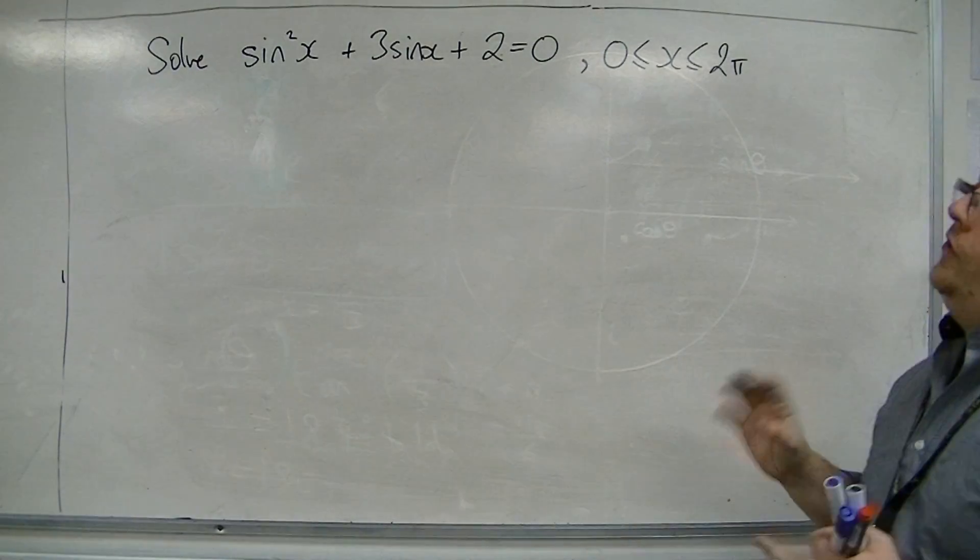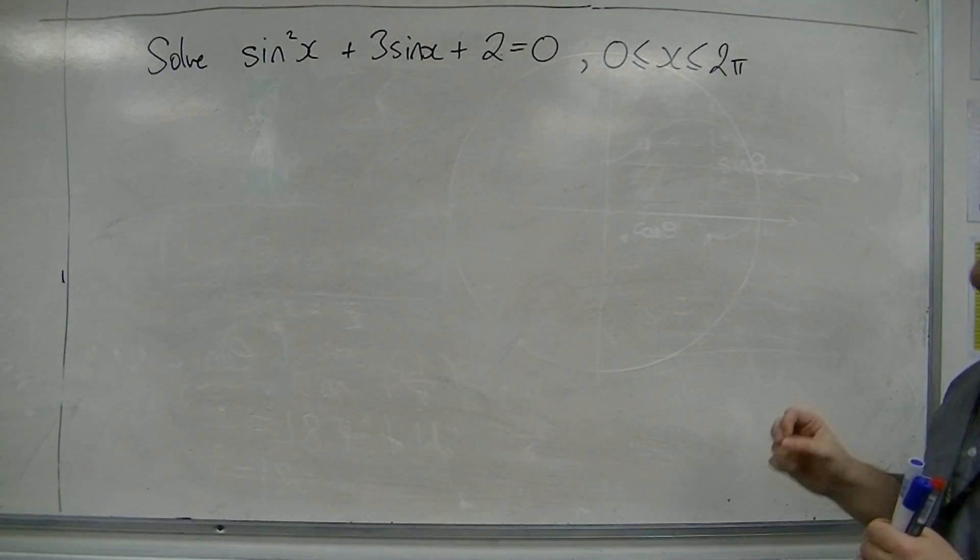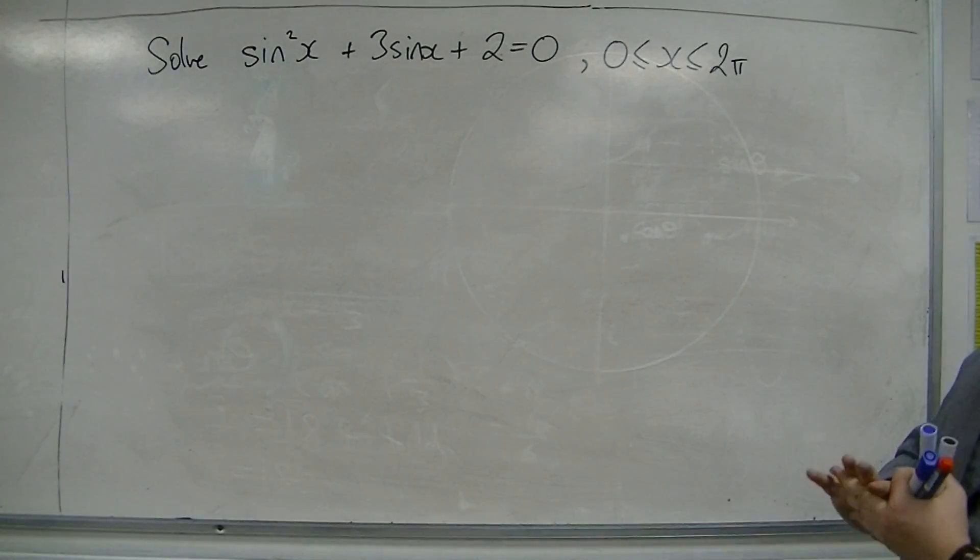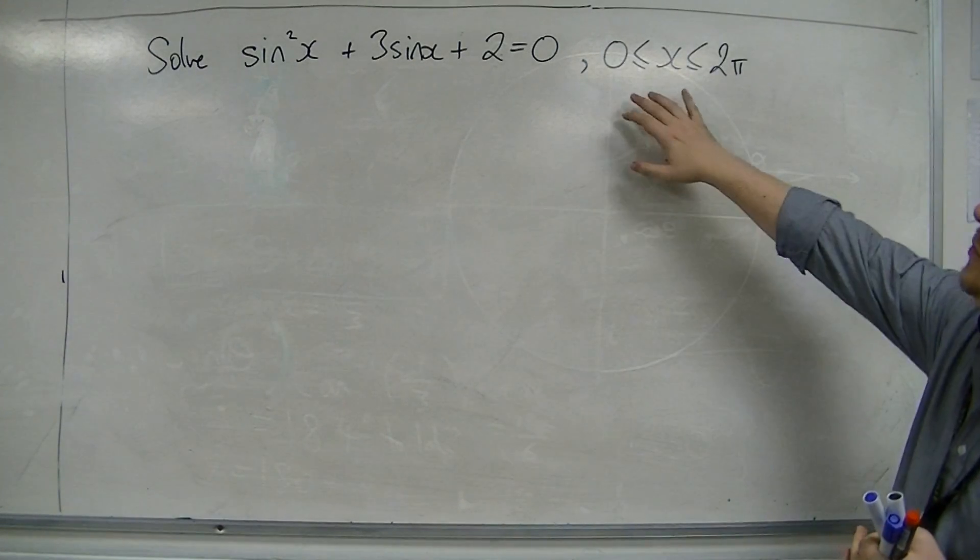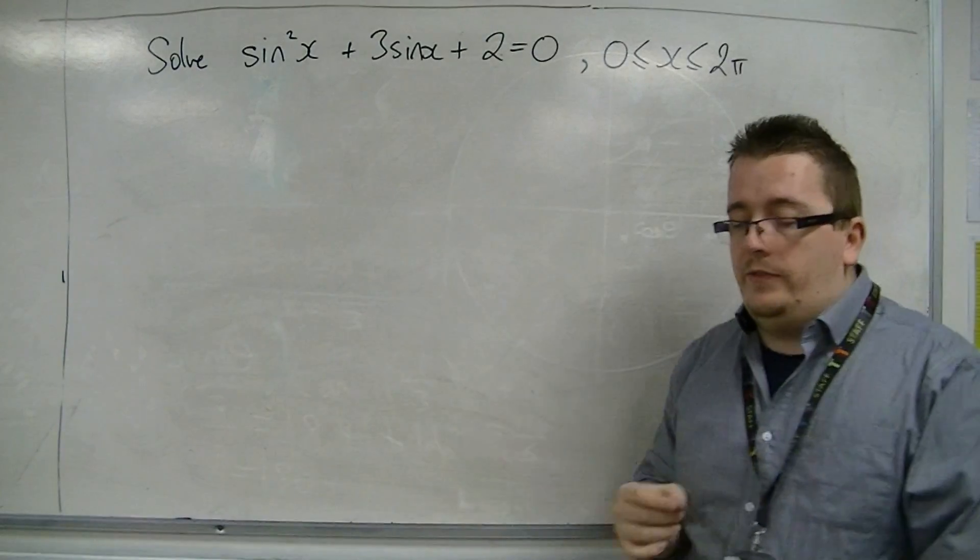We have sine squared x plus 3 sine x plus 2 equals 0. And we're going to be solving this trigonometric equation between 0 and 2 pi, so in radians.